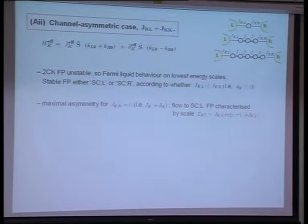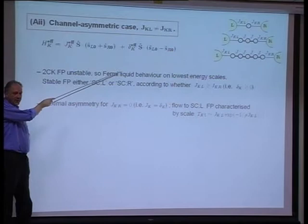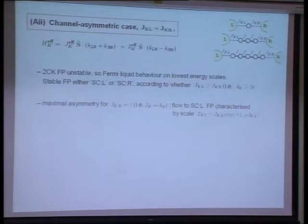What about channel anisotropy, where JK left is not equal to JK right? In this case, the two-channel Kondo fixed point is ultimately unstable, and you will have Fermi liquid behaviour on the lowest energy scales. Physically, the stable fixed point is either strong coupling left, if JK left is the larger, or strong coupling right, with maximal asymmetry when one coupling is equal to zero.